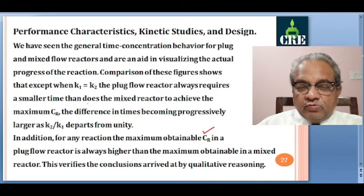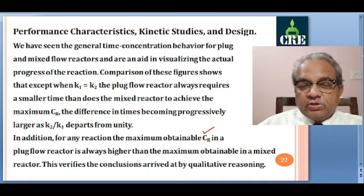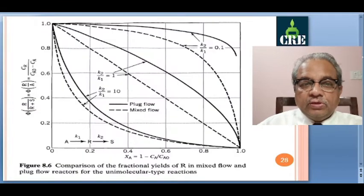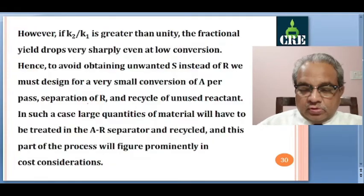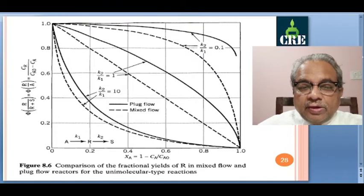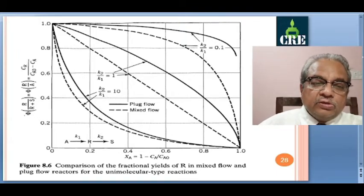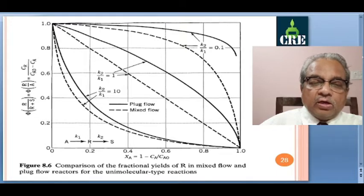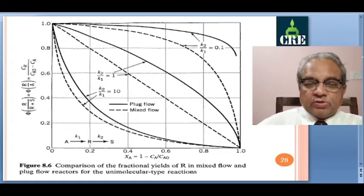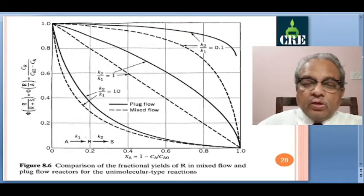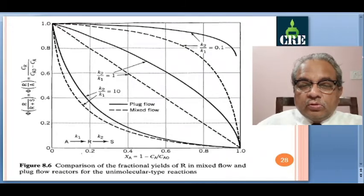So far we have only visualised and by intuition decided what kind of distribution there is. Now we will quantitatively verify this and for that we will see the models. Let us discuss this figure. Here, XA — that is, 1 minus CA/CA0 — is on the X-axis between 0 to 1. And the overall yield — whether it is R/(R+S), or CR divided by (CA0 minus CA) — all are the same representations of yields.